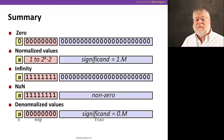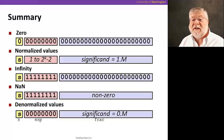Then we talked about normalized values, where the exponent is anywhere from one to two to the k minus two, where k is the number of bits of the exponent. And the significant is one point m, where m is the mantissa, what's represented in that blue portion of the number.